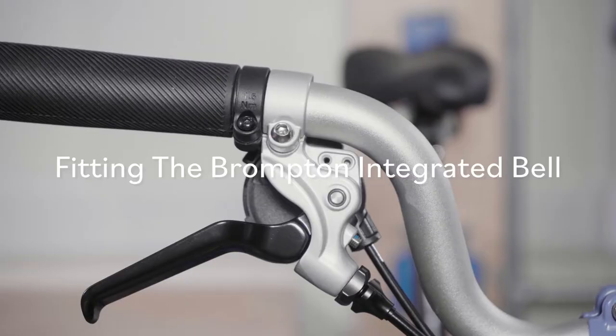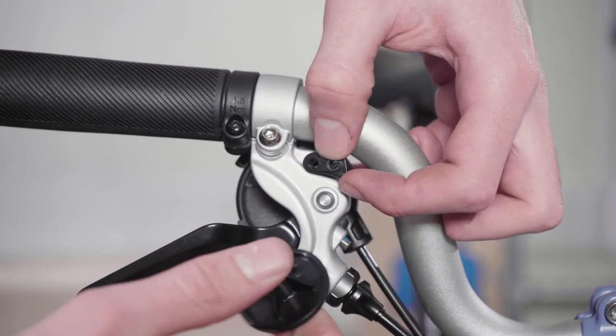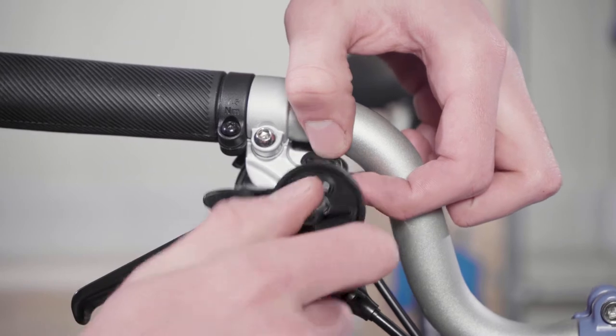Fitting the Brompton Integrated Bell. Fit the mounting block as shown, followed by the bell base and secure with the 2 socket headcap screws.